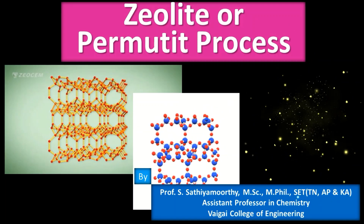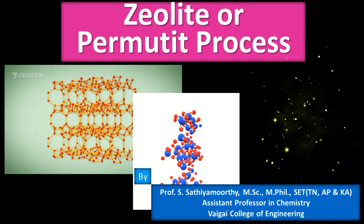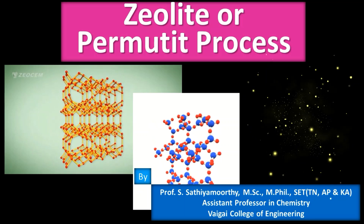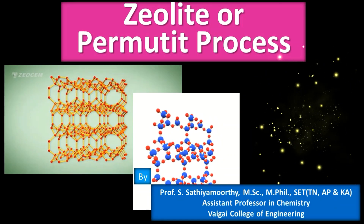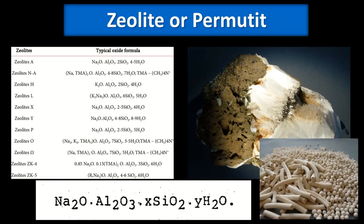In this process we treat the water outside the boiler, before feeding it into the boiler. Zeolites are beautiful compounds existing in nature, looking like clay-like compounds. Naturally occurring zeolites are hydrated alumino-silicate minerals and they are non-porous. We can also synthesize zeolite in the laboratory by heating sodium silicate, aluminum sulfate, and sodium aluminate together to form a crystalline and porous material with high ion exchange capacity.